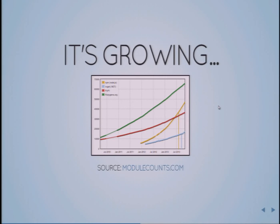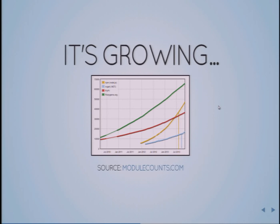This is from modulecounts.com — just the number of modules in the main package managers for different programming languages. Node is in gold there and has really high uptake. It's only been around for a few years and it's already beat Python with PyPI, and .NET and Ruby. Node has already beat Python, and sometime early next year it's going to eclipse Ruby as well. Something like 110 modules are getting added to NPM a day — a lot more, double that of Ruby. Because they're small, they're easy to make, and they're easy to publish.